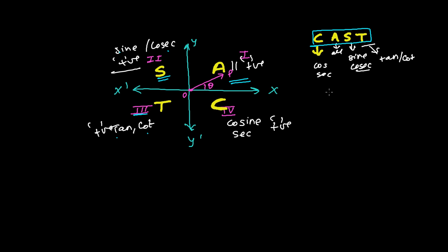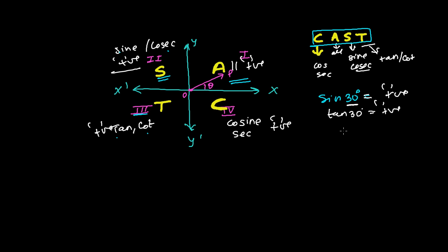So if I'm saying sine 30 degrees — I don't want to tell you the value yet, just whether it will be positive or negative. Sine 30 is in the first quadrant, and in the first quadrant everything is positive, so the result is positive. Similarly, tan 30 will also be positive. If I write cot 49, that will also be positive because 49 degrees is also in the first quadrant, between 0 and 90 degrees.